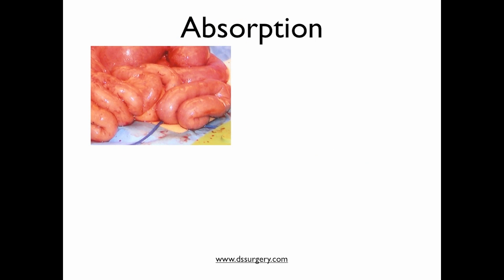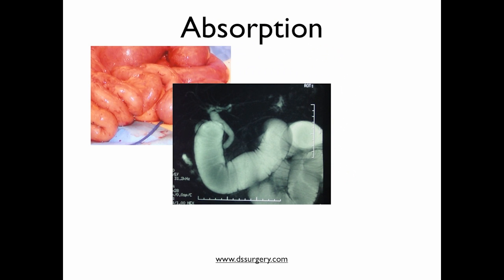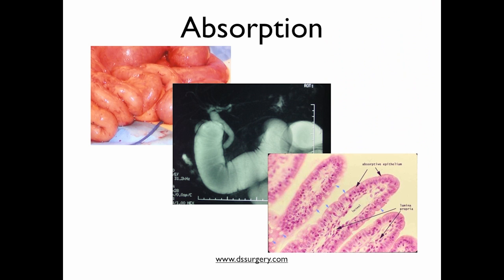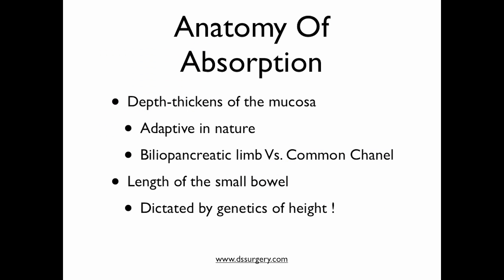Looking at an actual image of the small bowel — when you look at an MRI of the small bowel, you can see the folds, and under a microscope we appreciate how every single one of those lines represents a very deep groove where absorption takes place at the cellular level. Different disease processes cause either thickening or loss of those deep crevices where absorption occurs. The depth and thickness of the mucosa plays a significant role in absorption.